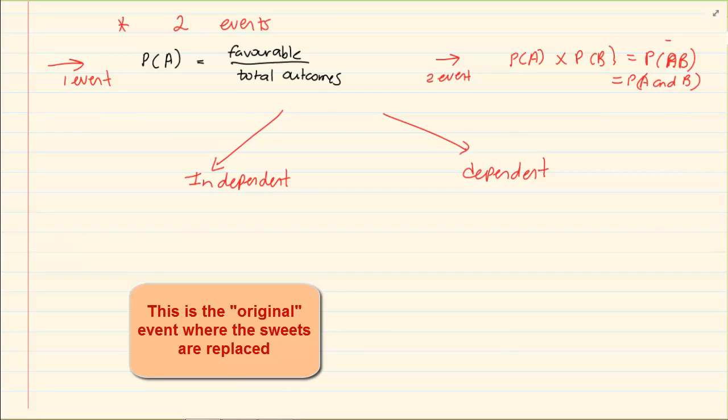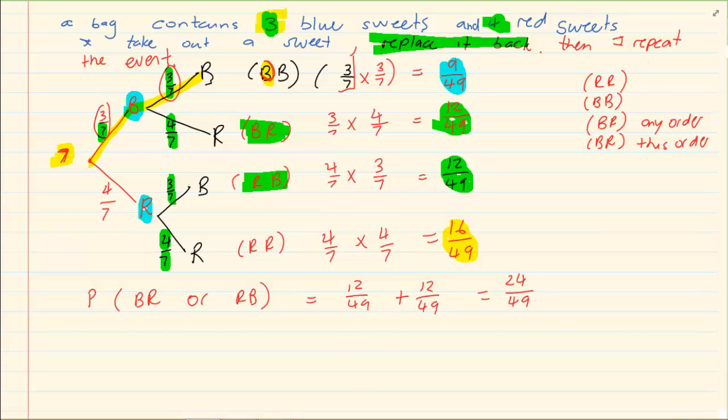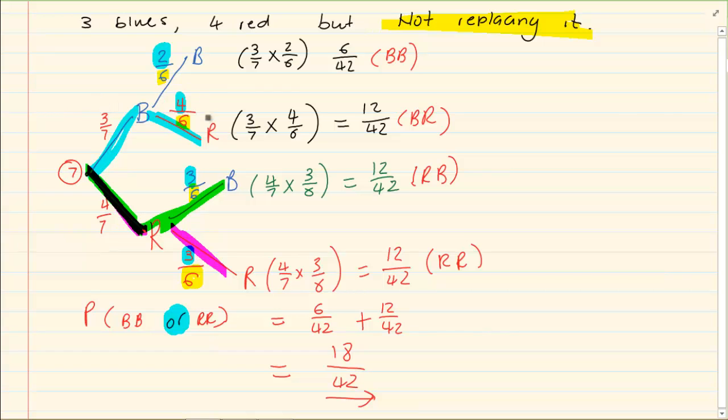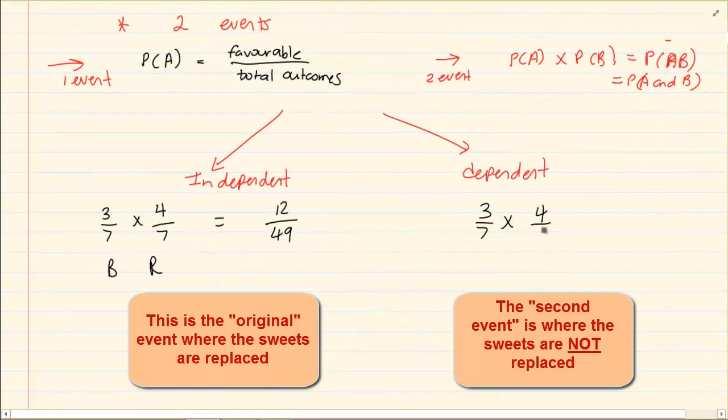We know that when we are calculating the value of two events, we are going to say P of A times P of B. We had had two types of events. The one event was when we had put back the sweets. The second event was when we did not put back the sweets. Now if we are taking the two events. Let's take the sweets. When I took a blue sweet, it was 3 over 7. Then I took a red sweet, which was 4 over 7. So I got a blue and a R, blue red. My total was 12 over 49. But when I did it on the other event, the first one I had a blue which was 3 over 7. Then I had a red which was 4 over 7. But let's take the second event. The blue is 3 over 7 and the red is 4 over 6. So I have got 3 over 7 times 4 over 6, which now this gave me as 12 over 42. This was also a B and a R. So you do understand how do I get these probabilities from our tree diagrams.